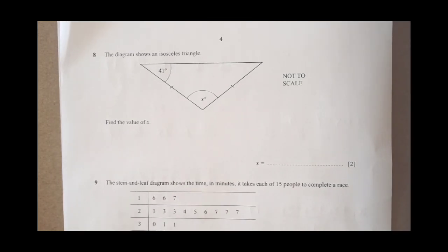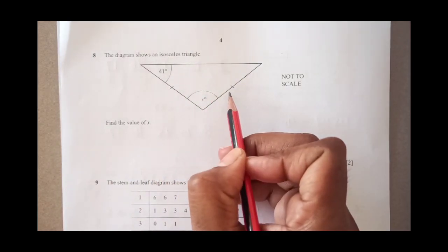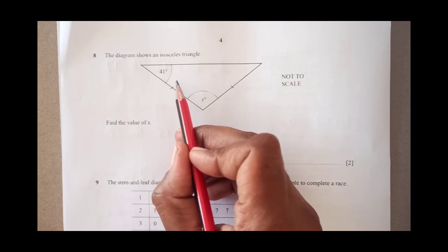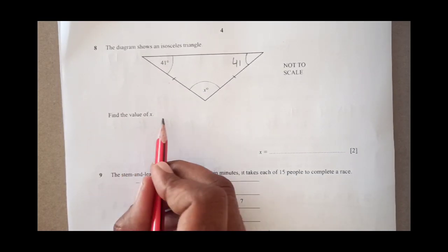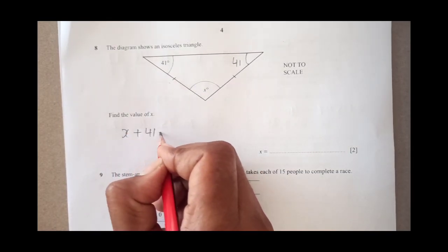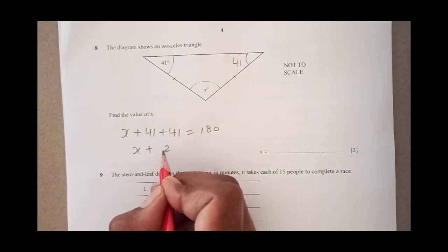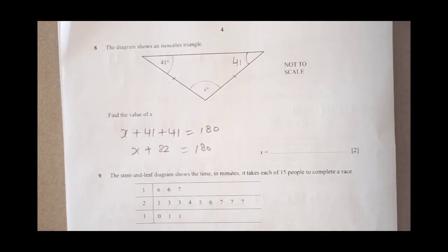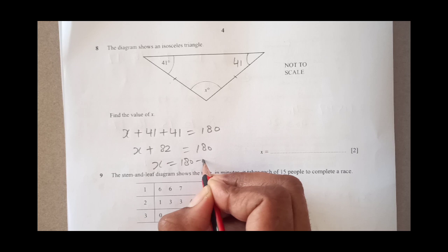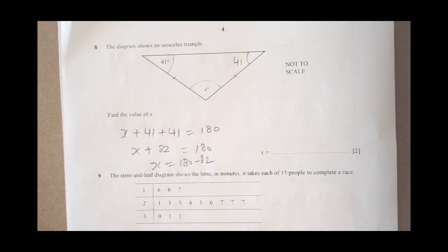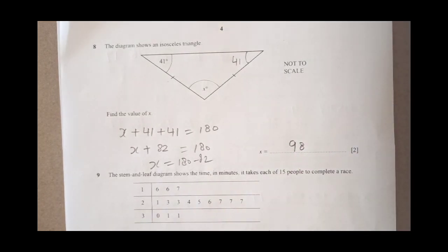Question number 8. The diagram shows an isosceles triangle. This angle is 41 degree. This side and this side is equal. That means the angles opposite to these sides are equal. If this is 41, this is also going to be 41. We are looking for x. Now x plus 41 plus 41 equals to 180. Final answer is going to be when you subtract x 180 minus 82, which is 98. Value of x is 98.